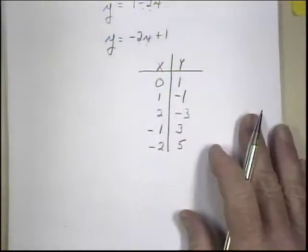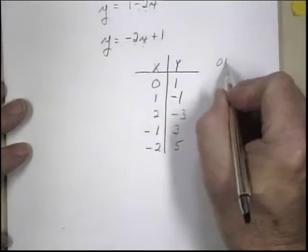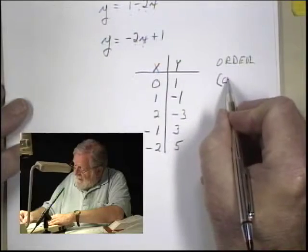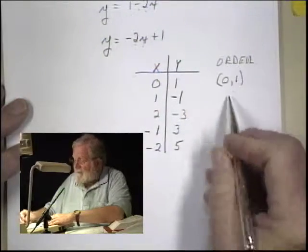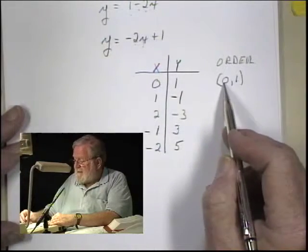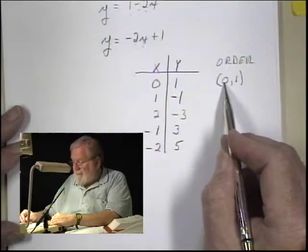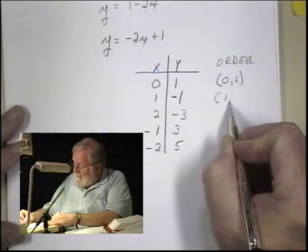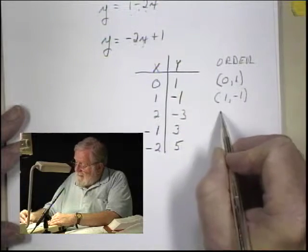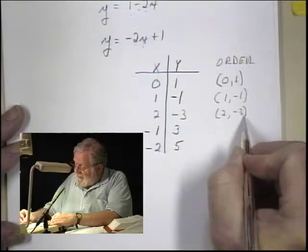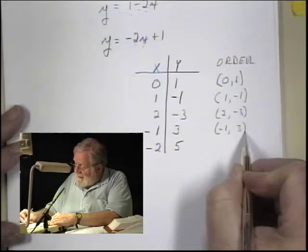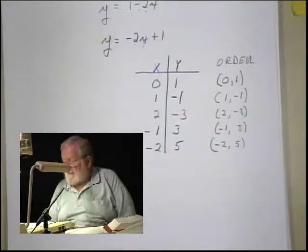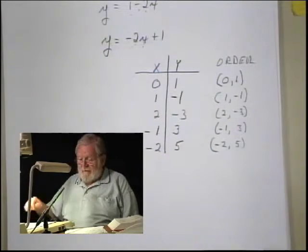Well, these are ordered pairs. Ordered pairs, remember, are pairs that have our x value and the corresponding y value. And we write ordered pairs usually in parentheses. We always write the x value first. We put a comma and then the y value. So this ordered pair would be 1 and minus 1 and 2 and minus 3. And here we'd have minus 1 and 3 and minus 2 and 5. And that's what we learned last time, how to generate these ordered pairs.